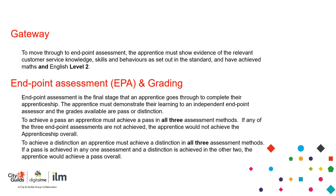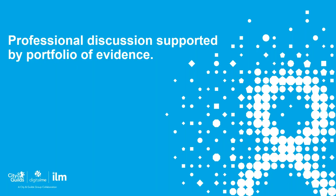EPA is the final stage of the apprenticeship and everything, including the portfolio, should be complete at this stage — apart from the project. As far as grading is concerned, to achieve a pass the learner must achieve a pass in all three assessment methods. If any aren't achieved, the apprentice fails and would need a resit. To achieve a distinction, the apprentice must achieve a distinction in all three components.